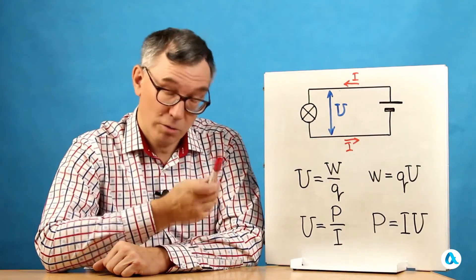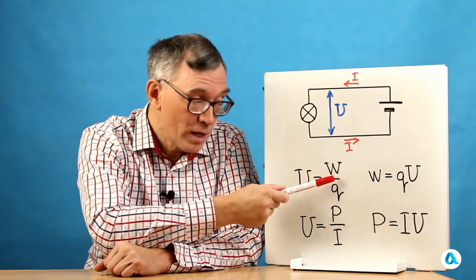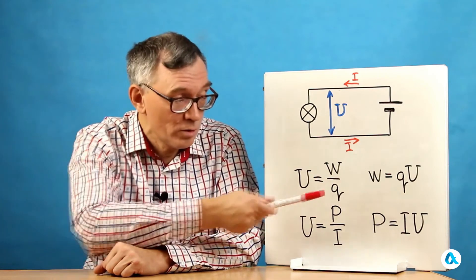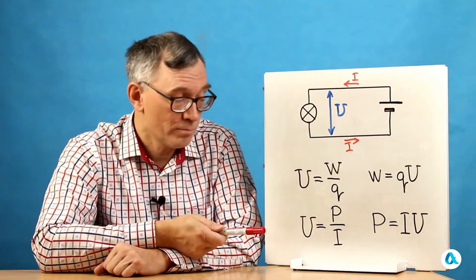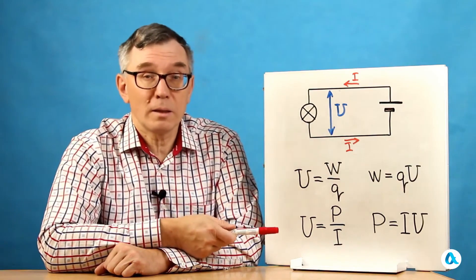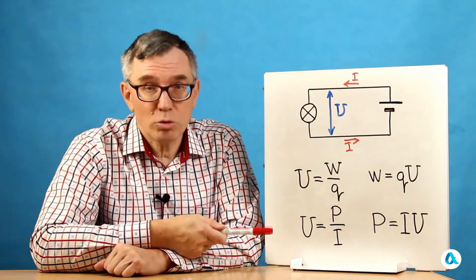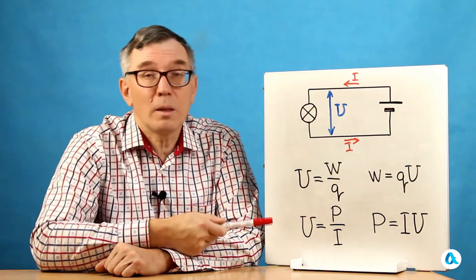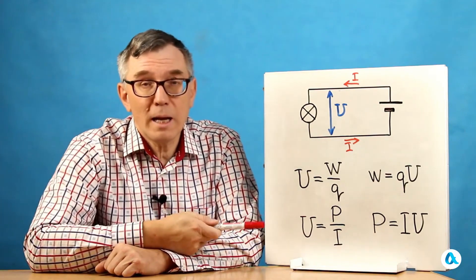Now all that's left is to write in formula form what I've just explained. First of all, the voltage drop across the light bulb equals the ratio of the energy released in it to the electric charge that has passed through the bulb. And this formula can also be rewritten in another convenient form. The energy released in the light bulb is equal to the product of the charge and the voltage. And if we take the energy released in the light bulb per unit of time, that will be the power. And in this case, the charge that passes through in the same unit of time is equal to the current. And we get another formula. Voltage is equal to the ratio of power to current in the circuit. Accordingly, the power released in the light bulb is equal to the product of the current and the voltage drop across the bulb.